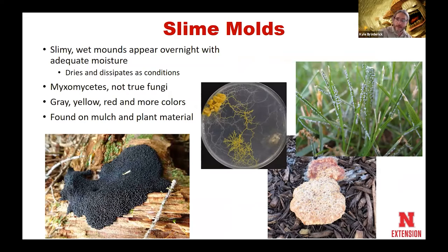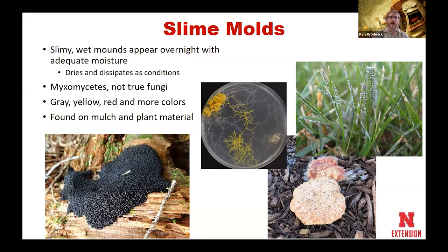The first thing in our yard that I'm going to talk about are slime molds — probably the most fun type of fungus we see in our yard. But again, slime molds are not true fungi; we call them fungi, but they're actually myxomycetes. They tend to appear in slimy wet mounds almost overnight, and we can have really large masses of slime that occur overnight in a variety of colors — gray, yellow, red, orange, black, white, all sorts of different colors.